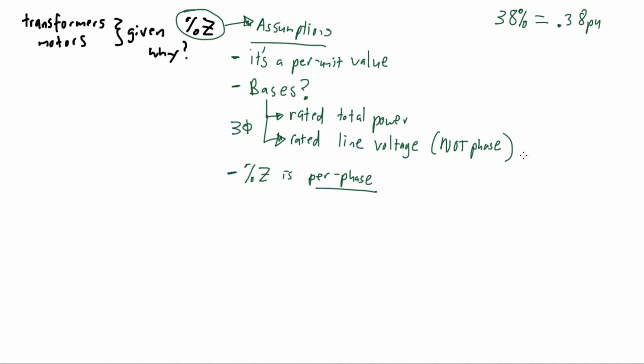Now that we know when impedance is provided as a percentage that signifies a per unit value with the bases already assigned, sometimes we will find ourselves in circumstances where the bases supplied by that impedance value don't really meet the case of our problem at hand.